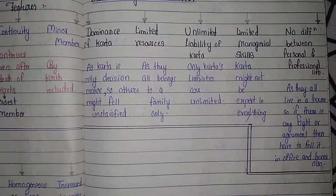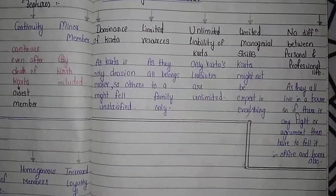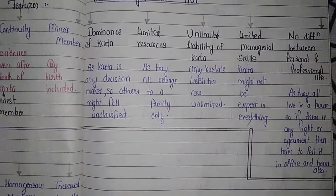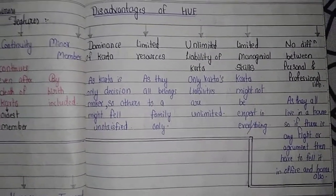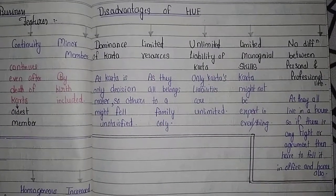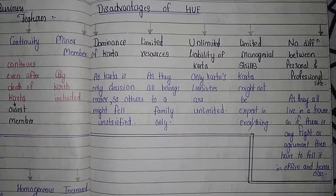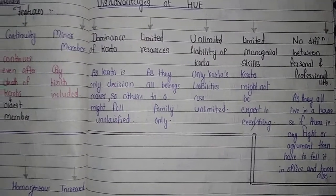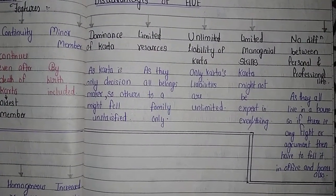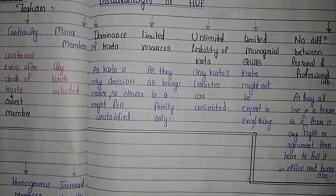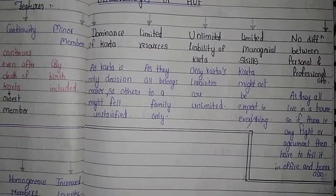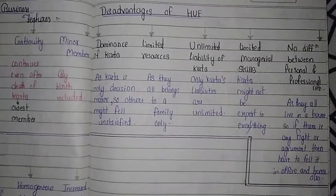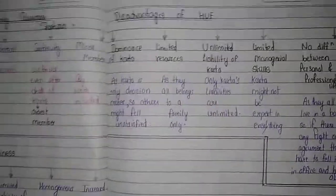The last disadvantage is no difference between personal and professional life. If you have a business with family members, those working in the office are also your family members, and those living at home are also your family members. So in this case, there is no difference between your personal and professional life.